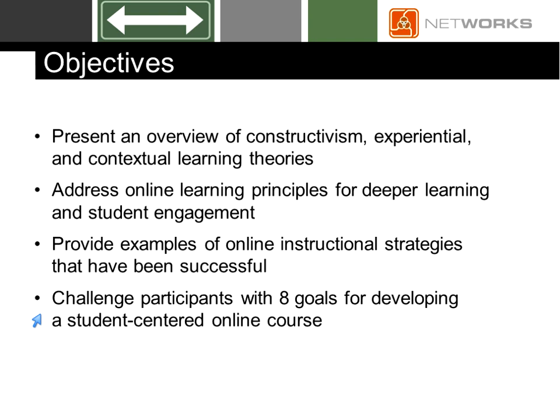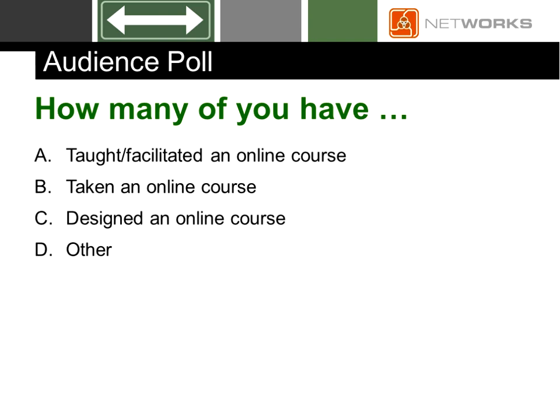Now let me ask participants some questions about yourselves with an audience poll. Use the poll responding button near the top of the participants list. How many of you have taught or facilitated an online course? That's A. How many have taken an online course? That's B. C, designed an online course, or D, other. There may be some overlap, but just give your best answer.